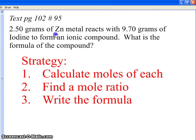I took this out of your book, and this problem has two elements in the compound. There's zinc in the compound and iodine in the compound. And what we know is that the mass of zinc is 2.5 grams and the mass of iodine is 9.7 grams. But we don't know the formula of the compound.